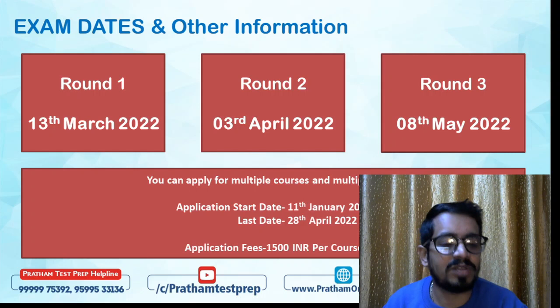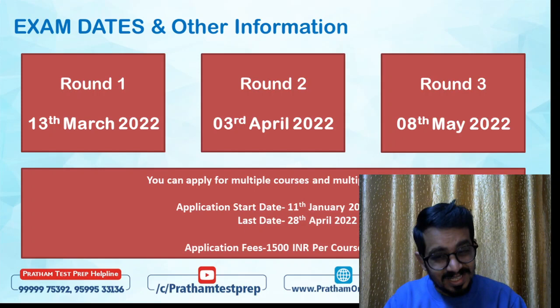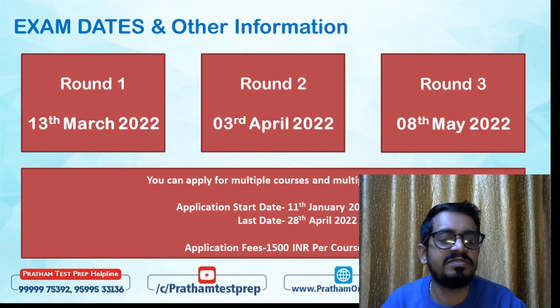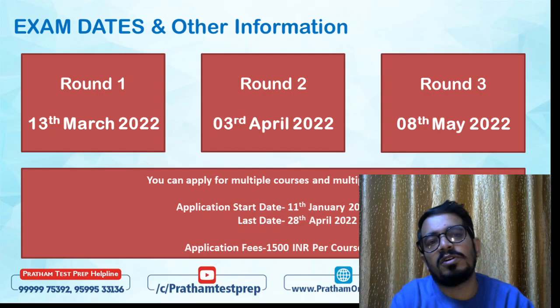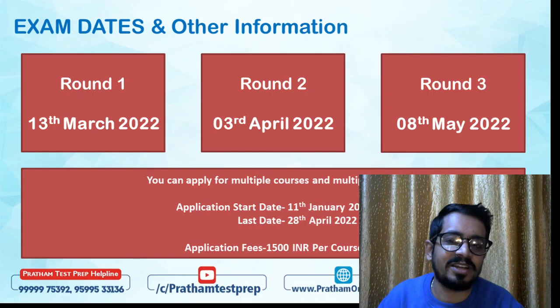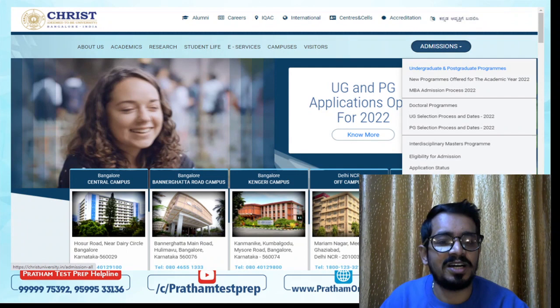The application window opened on 11th January 2022 and the last date to fill the form is 28th April 2022. However, I recommend not delaying — fill the form as soon as you watch the form filling video. The application fee is 1500 rupees per course. So if you're applying for Law and Psychology separately, you'll pay 1500 rupees for each course individually.